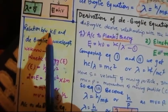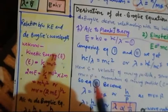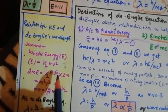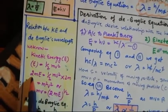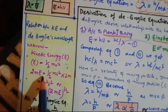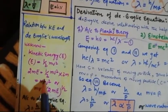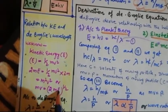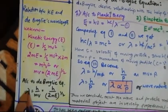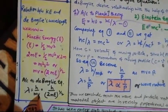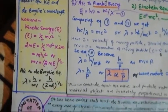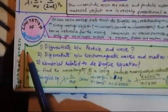Let's discuss the relationship between kinetic energy and the de Broglie equation. As you know, kinetic energy is E = ½mv². Multiplying both sides by 2m: 2mE = m²v², so mv = √(2mE). According to de Broglie, lambda = h/mv, so substituting mv with √(2mE), it becomes lambda = h / √(2mE), or equivalently lambda = h(2mE)^(−1/2).